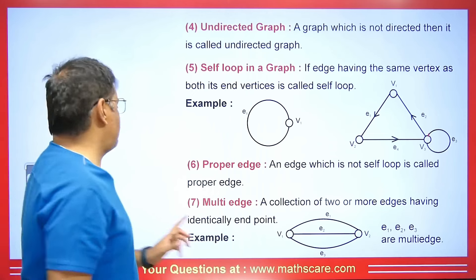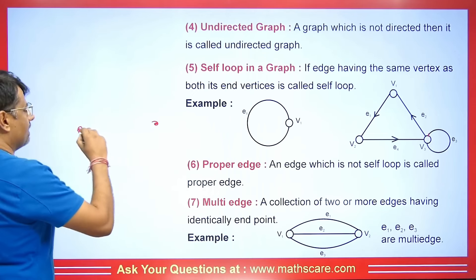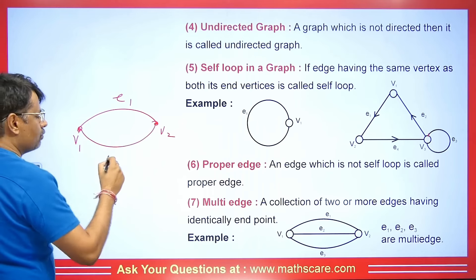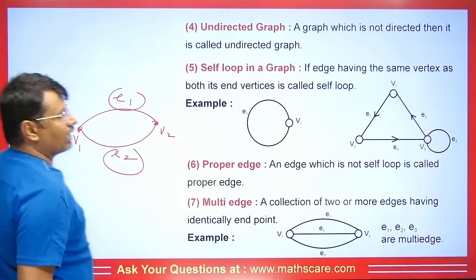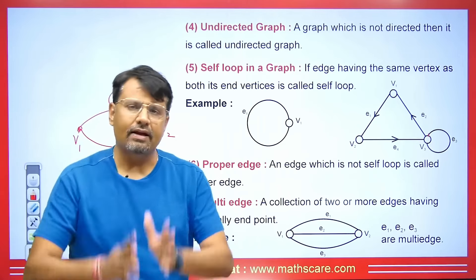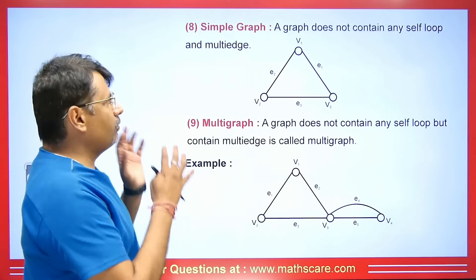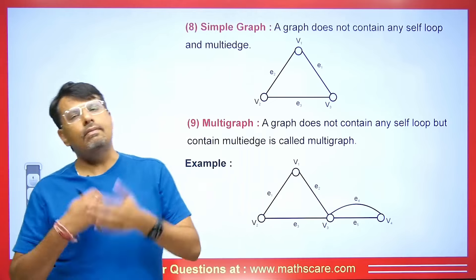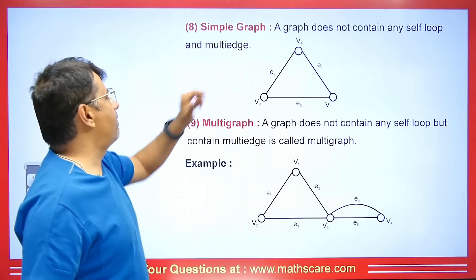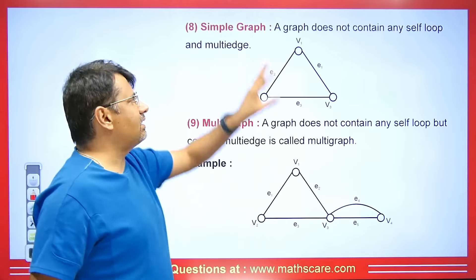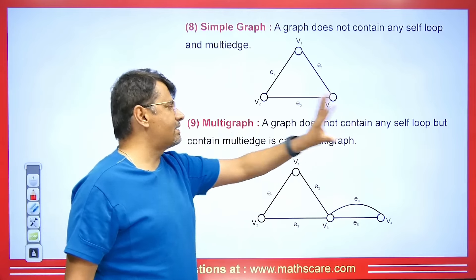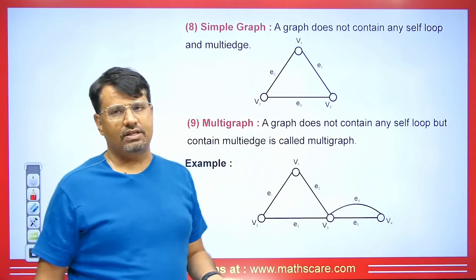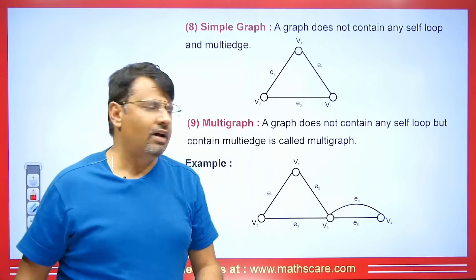Now let's see what a multi-edge means. Whenever we have two vertices — say V1 and V2 connected by edge E1 — and another edge also connects those same two vertices, then more than one edge is connecting the two vertices. This type of edge is called a multi-edge. A simple graph does not contain any self-loop or multi-edge. If a graph has multi-edges but no self-loop, it is called a multigraph.